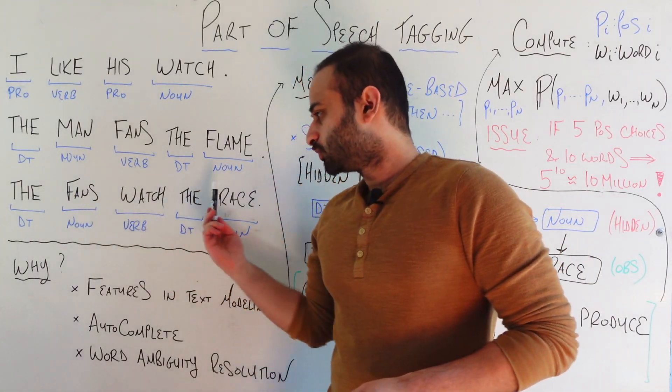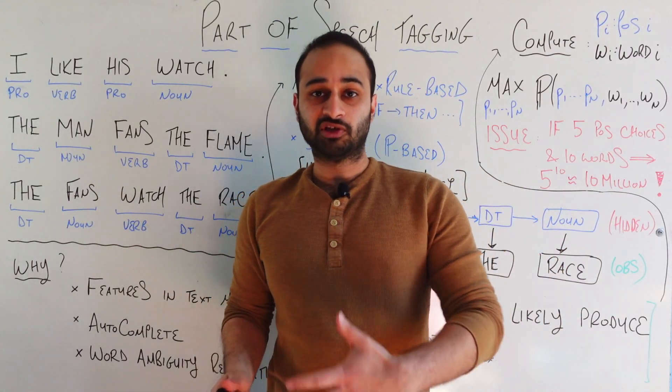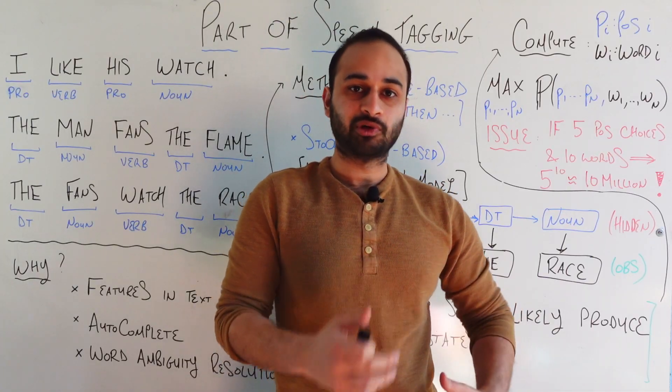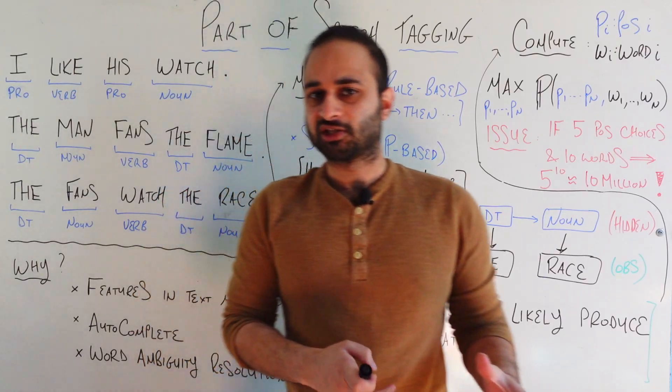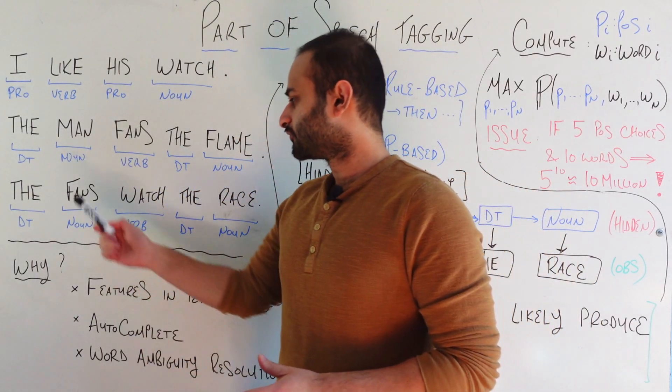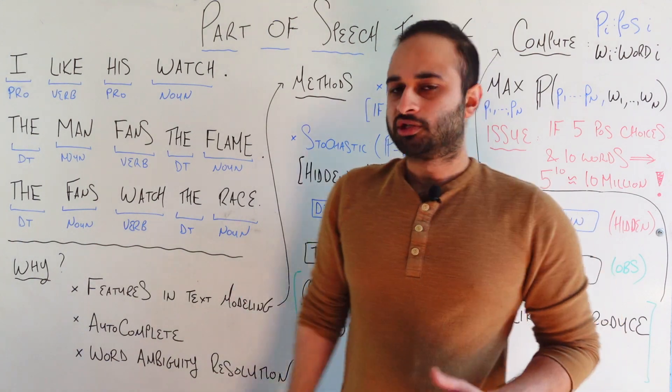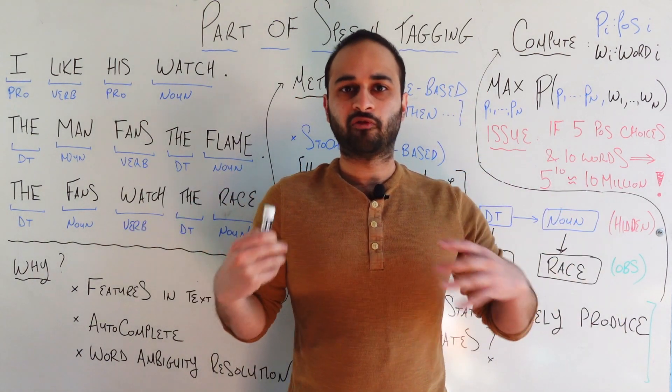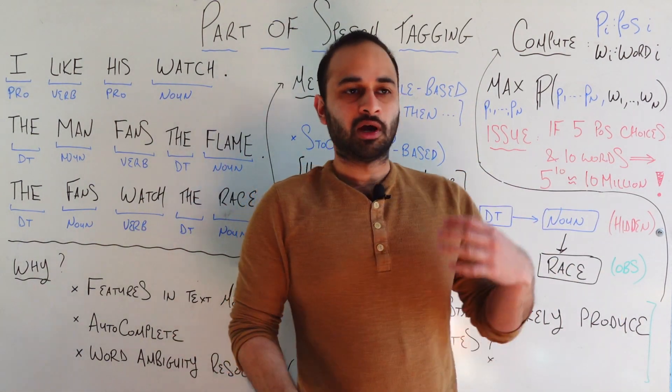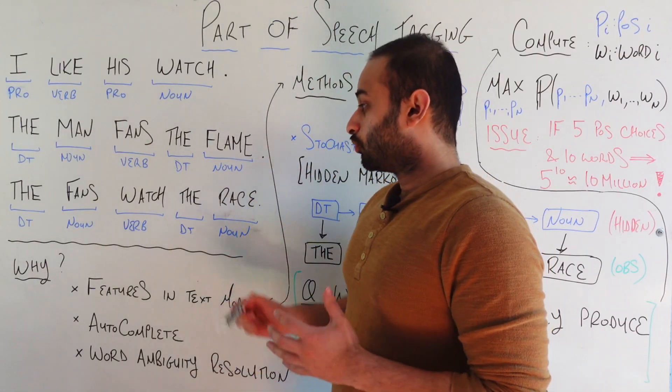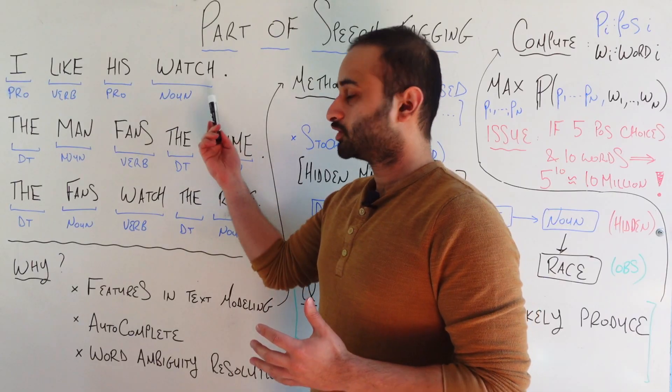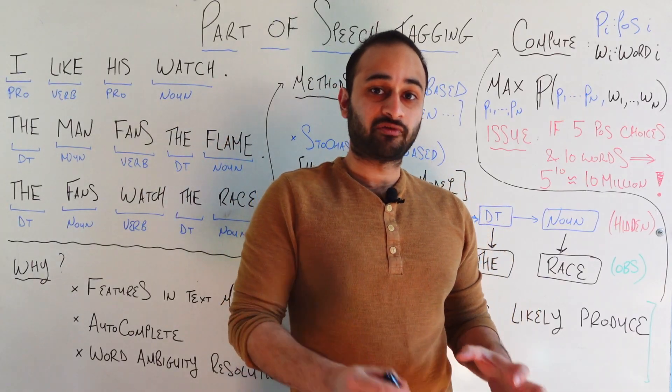So now I wrote this third sentence, because it includes several words from the previous two, but they're used in very different ways. And now we start getting an idea about why we might care about part of speech tagging and natural language processing. So this sentence says, the fans watch the race. So we're imagining now some kind of stadium full of fans, and they're watching some kind of race, either a car race or people racing something.